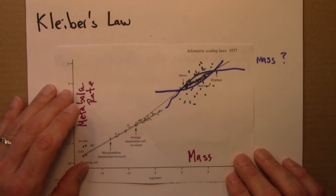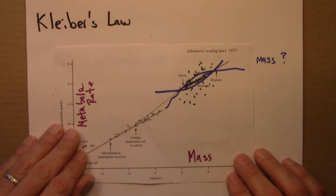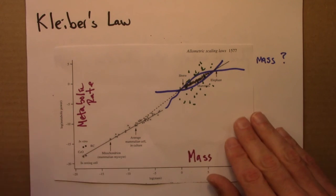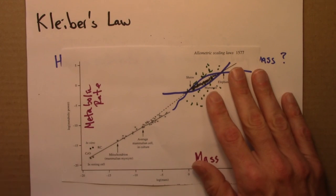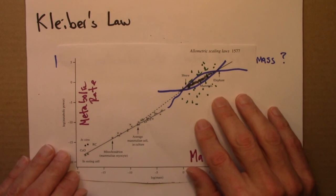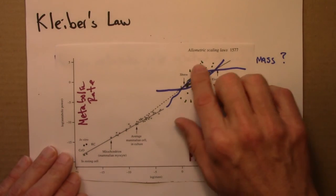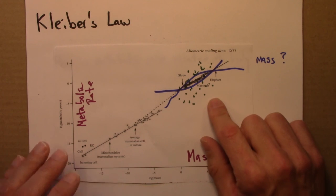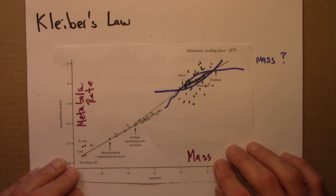In the next couple videos, I'm going to talk about scaling a little bit more generally, and we'll think about surface area to volume ratios, and see that that doesn't explain this relationship. And then, we'll look at the West-Brown-Enquist theory, and see how thinking about this as a fractal network can provide a good potential explanation for why we see an exponent of three quarters.